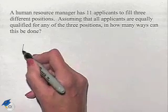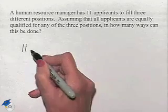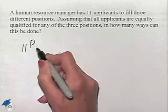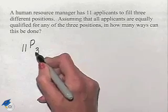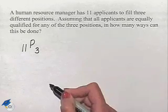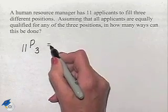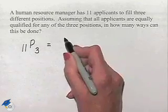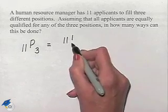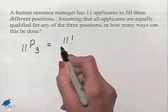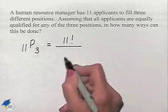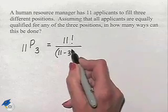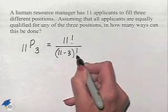We're going to have 11 to choose from. We're going to have a permutation where we're going to choose three at a time. The formula that we're going to use tells us to take 11 factorial in our numerator, and divide that by the difference between 11 and 3 factorial.